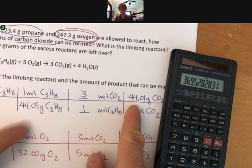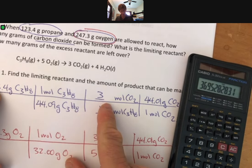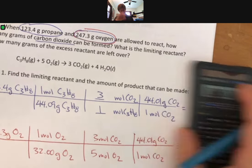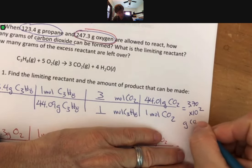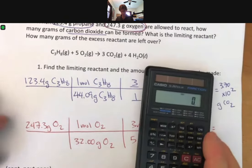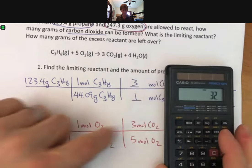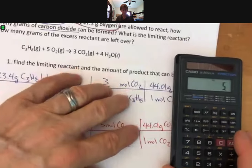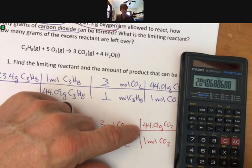I'm starting with 123.4 divided by 44.09 times 3 and times 44.01, 369.5 or 370 really. So these two numbers almost exactly cancel out. So my answer should be roughly 3 times this number. If we're going to do this to 3 sig figs, it should be 3.70 times 10 to the 2. That's going to be grams of carbon dioxide. Let's see what we get for the other one.